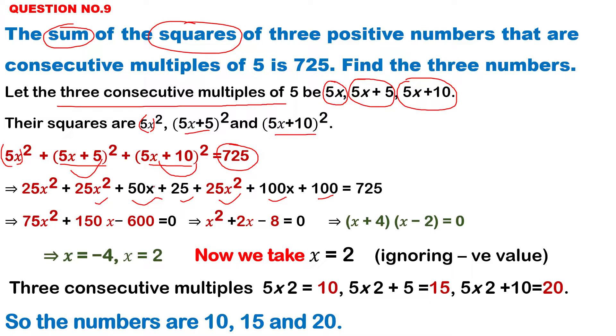Now simplify. x square how many? 75x square, then 150x minus 600. What is common between all these three numbers? 75. We take 75 common and transpose to right hand side, it will be 0. So equation is x square plus 2x minus 8 is equal to 0.